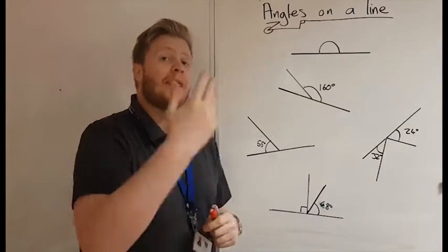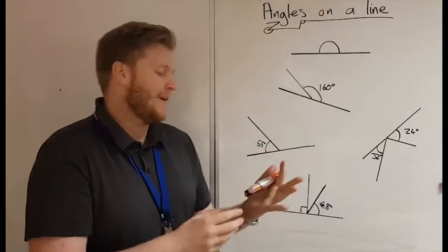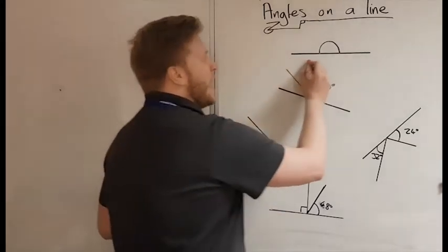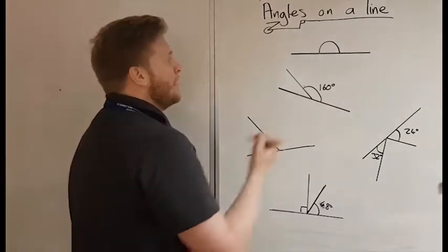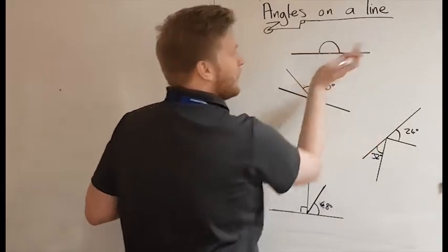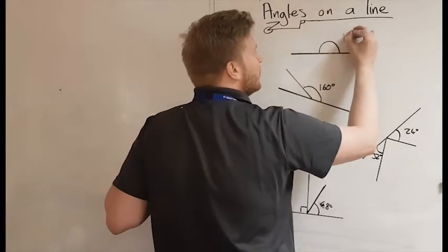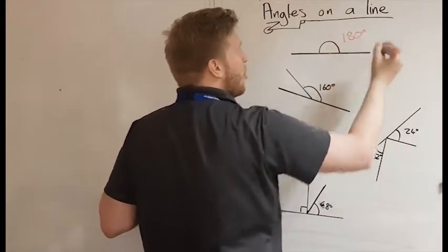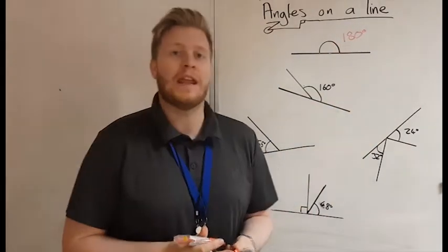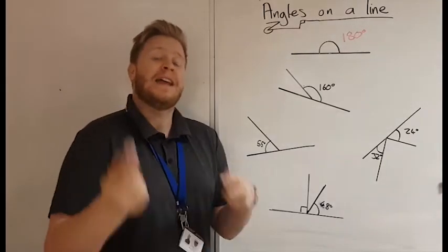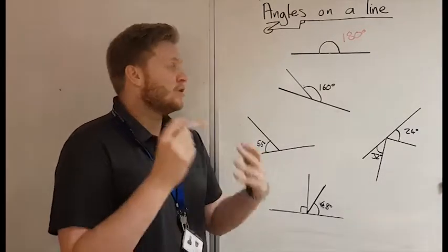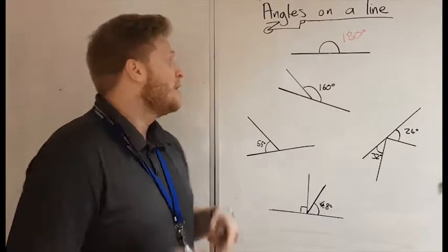First we're going to look at a line, and then we're going to look at a point. What I mean by how many degrees - this is a straight line angle. Imagine this is the point in the middle there, and we've got one line turned all the way around, and that is 180 degrees. All straight lines are 180 degrees, so we're going to use that to help us find other angles.